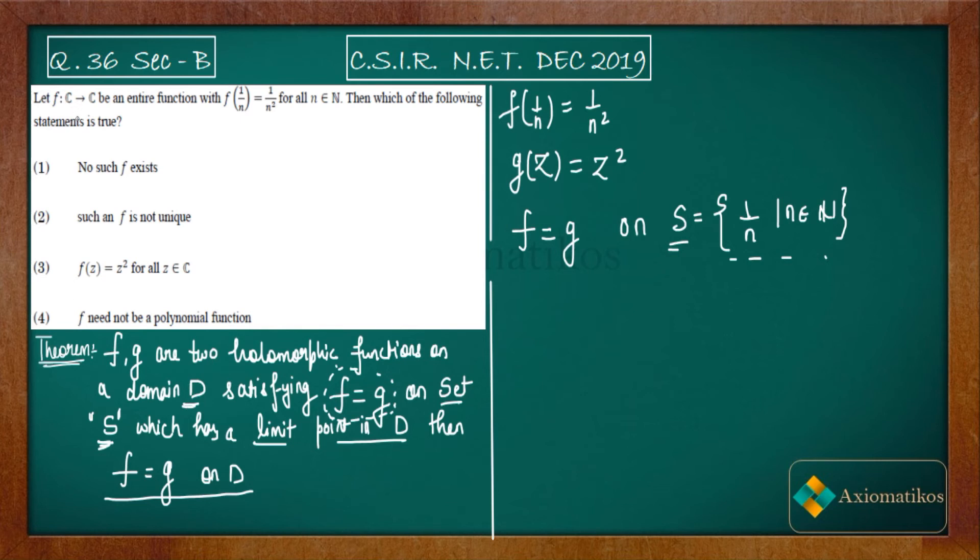Now because zero is inside your domain C, that is why according to the identity theorem we can say that f(z) is also equal to z². That means for all z belongs to C. So finally we have proved according to the identity theorem that your function will be z².